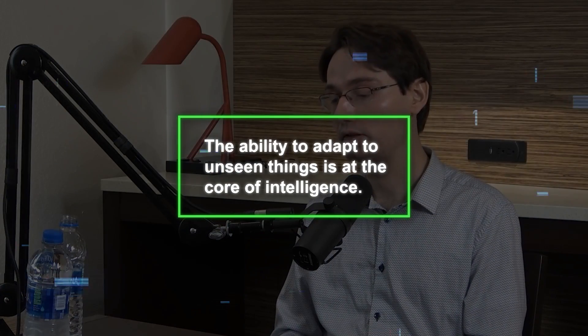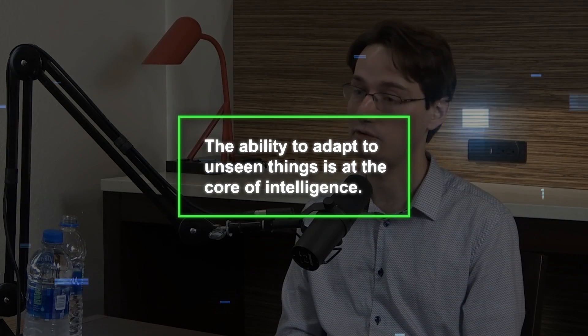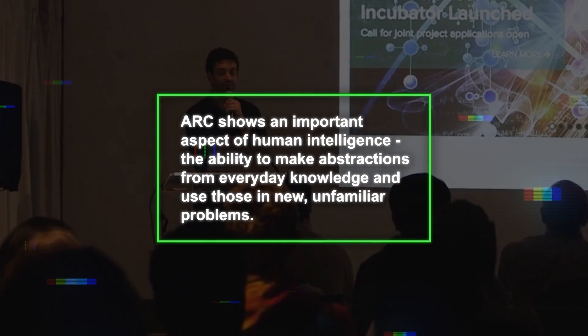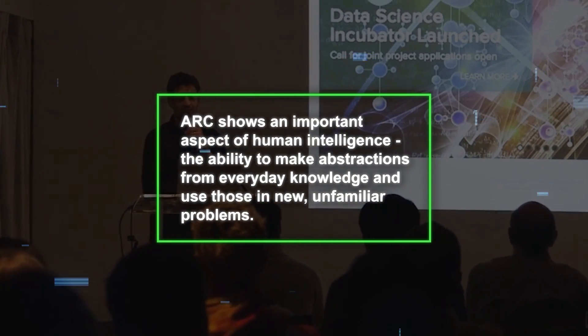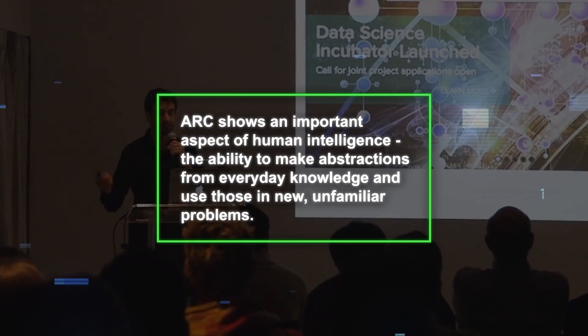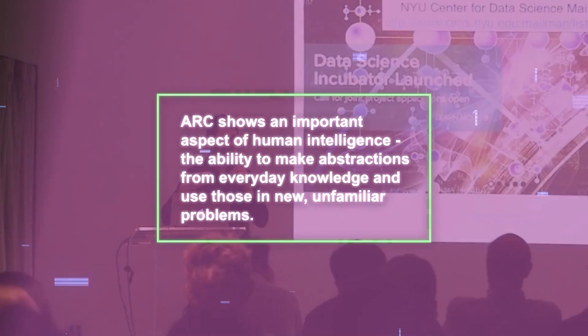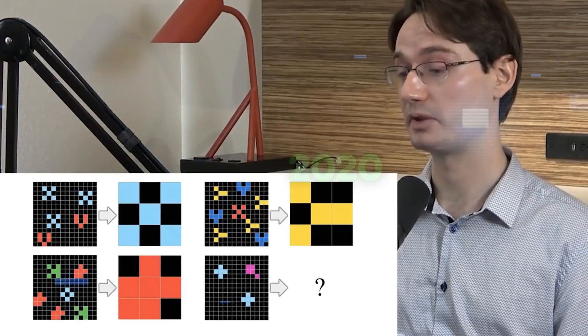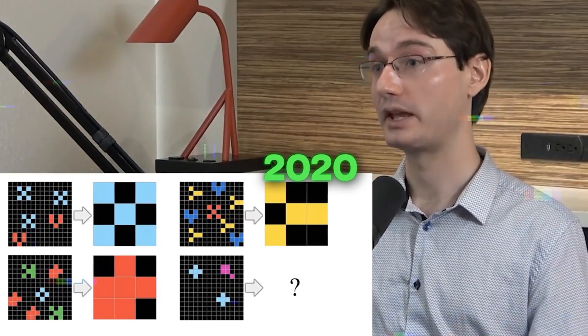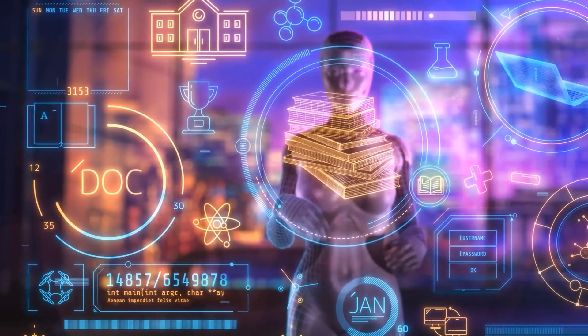According to Chalet, the ability to adapt to unseen things is at the core of intelligence. Lake says ARC shows an important aspect of human intelligence: the ability to make abstractions from everyday knowledge and use those in new, unfamiliar problems.